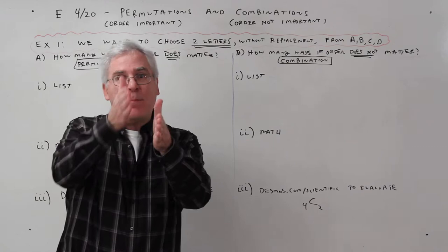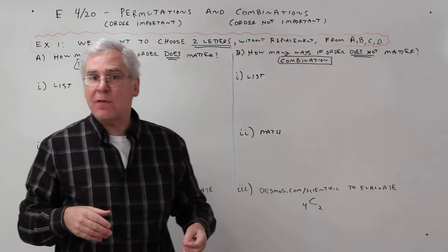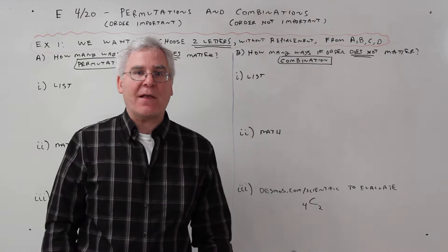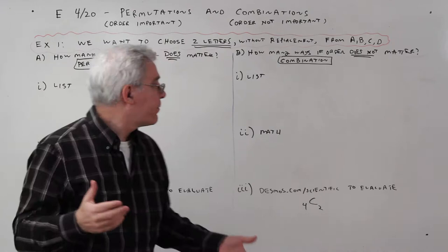For example, permutations, if I'm going to line people up, it depends on if you're first or last, it's much different. Combinations, I'm going to pick five people to be on a committee. Either you're on the committee or you're not. It doesn't matter about order. Also for combinations, I'm going to pick the five starters for a basketball game. Either you're a starter or you're not a starter. It's not, haha, he picked me first.